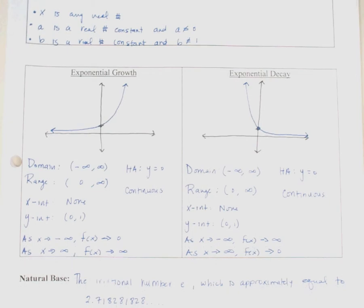Exponential functions come in two forms: they either represent exponential growth or exponential decay. Functions representing growth increase as you move from left to right, and functions representing decay decrease from left to right. In addition to analyzing the graphs, we can focus on domain, range, intercepts, behavior, horizontal asymptotes, and whether they are continuous. All exponential functions have a horizontal asymptote, and in the parent function it always lies at y equals 0, but can shift up or down depending on where the graph shifts.